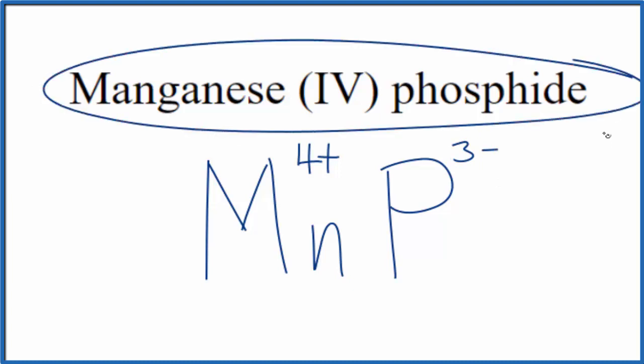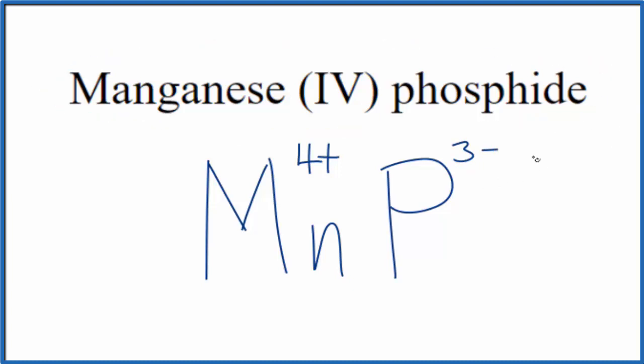And since this is neutral, doesn't have the word ion after it, these charges they need to add up to zero. We need a net charge of zero. We can use the crisscross method here to help us out. We can move the 3 down here and the 4 over here, get rid of these, and that gives us the formula for manganese IV phosphide: Mn3P4.